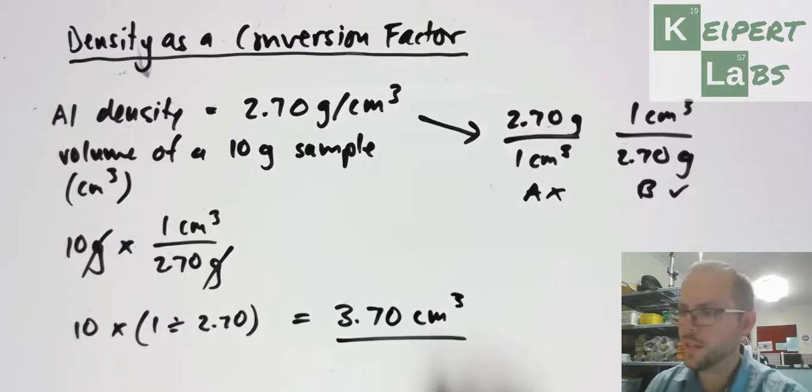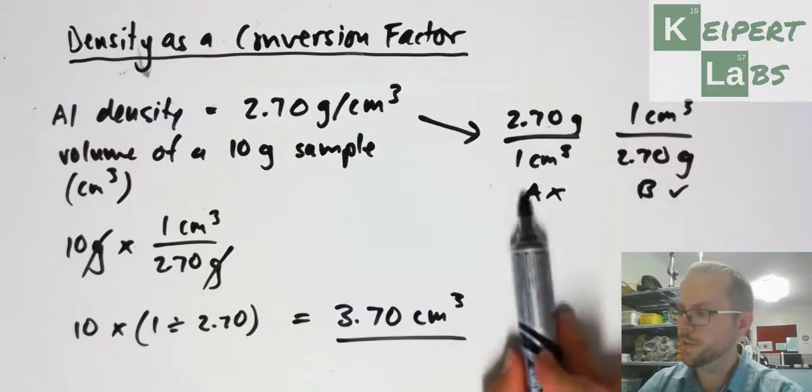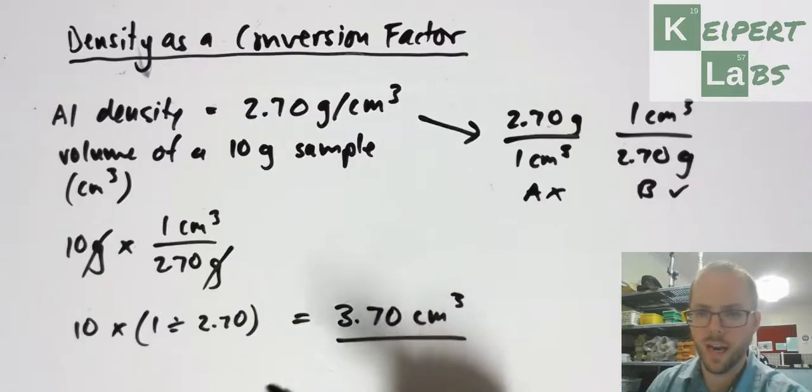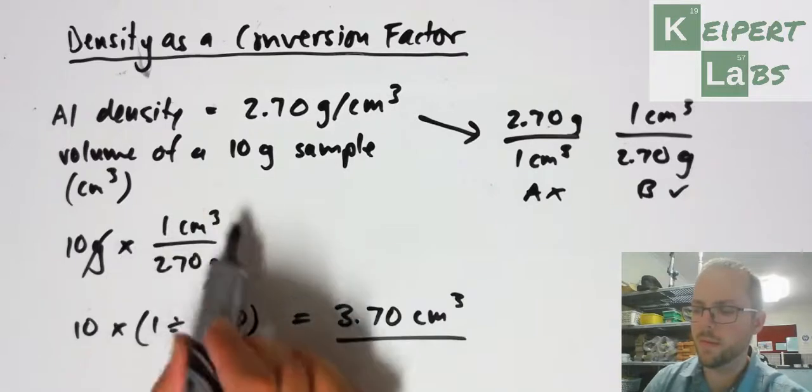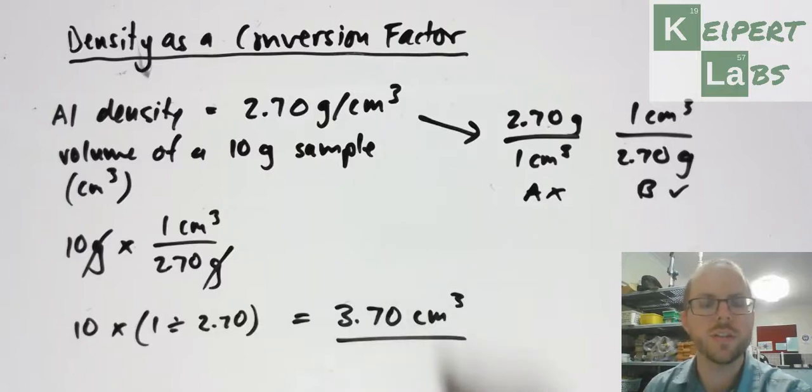You can see in both examples, I've used the process of setting up a conversion factor, setting up two versions, then making a choice about which one has the units I want over the units I have. I multiply that by the number I'm given, put the numbers in the calculator appropriately, and get the answer in the units I want. Even though this is a chemistry context - calculating based on density - we're using this process and it works out really well.